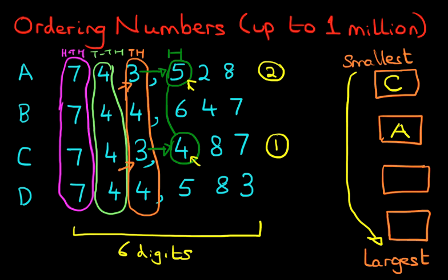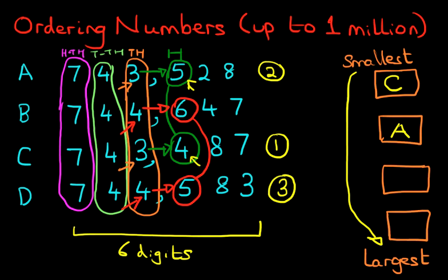Now, did you see how we worked that out? Good. We'll move on to the two numbers that are remaining. Going back to the ten thousands, we've got a four here and a four here. Those do not tell us which is the largest and which is third. So we look at the hundreds — we are now comparing the six with the five. Six hundred with five hundred. The smaller number is naturally the five. So this becomes number three — that is D.